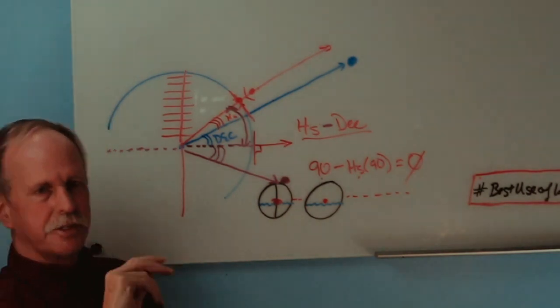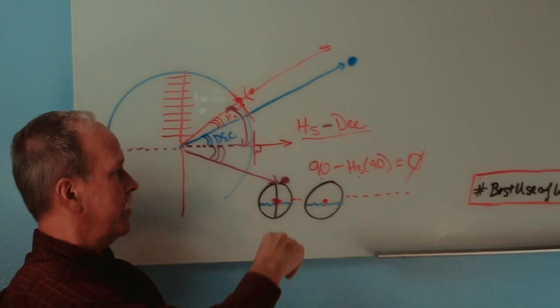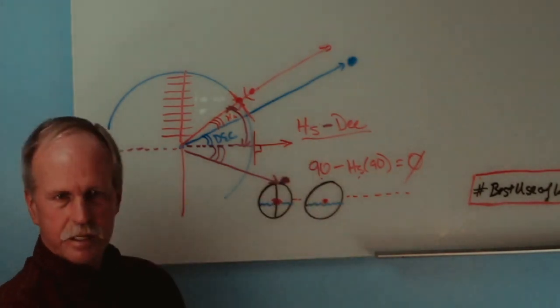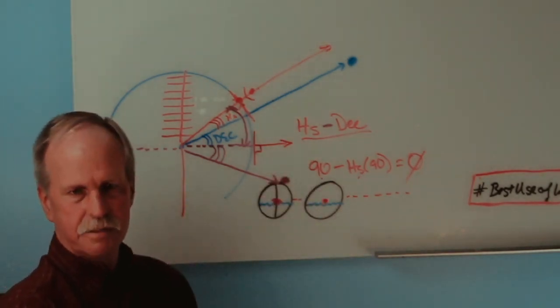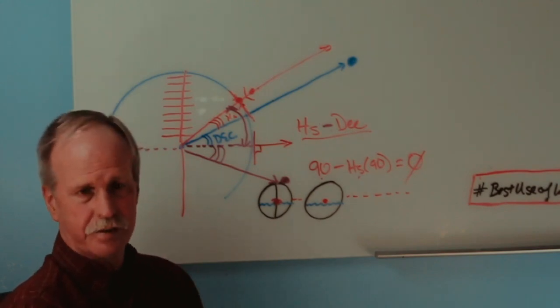Now there's two other situations that you can have. First is that the Sun is directly over the equator, in which case the declination is zero. It doesn't matter if you add it or subtract it. You don't even have to deal with it.